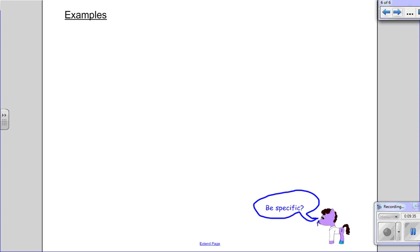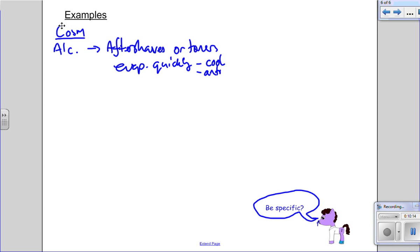Now, let's be specific. Okay, so we're going to do cosmetics to start off with. Alcohols: you have aftershaves or toners. Now why? They evaporate quickly, which means they cool your skin. They're mildly antiseptic, which means they kill the bugs on there. And they're astringent, which means they close the pores.